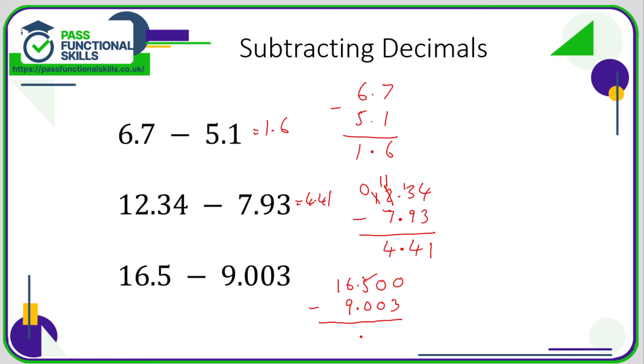5 becomes 4, this 0 becomes a 10, so I can borrow from the 10. The 10 will now become a 9 so that I can fill this column up and make it 10. 10 take away 3 is 7, 9 minus 0 is 9, 4 minus 0 is 4.